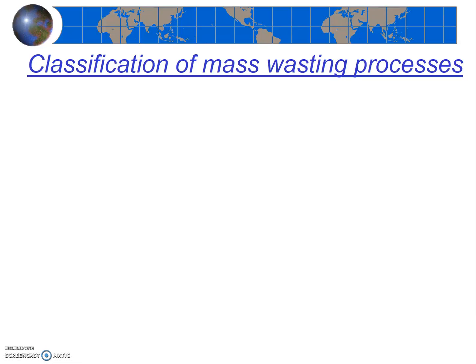We now understand what mass wasting is and how mass wasting events might be triggered. In the last video clip we discussed four common triggers of mass wasting events. Now let's look at how we classify or name mass wasting events. Commonly people may just use a general term like landslides, but there is an easy and very precise naming system.